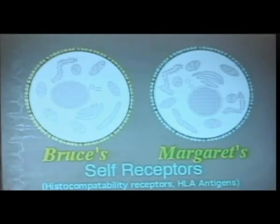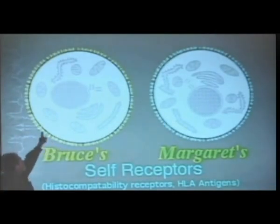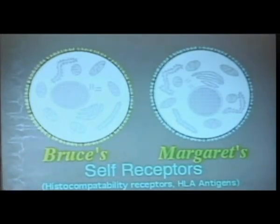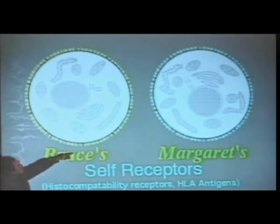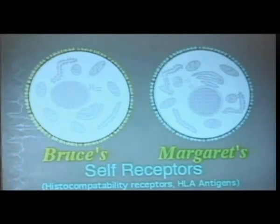Why is this relevant? If I take my self-receptors off my cell — I take an enzyme and cut off these yellow receptors — my cell becomes generic. I can implant it in any human and it will never be rejected. I can implant it into a mouse and it won't be rejected. There's no identity to it.